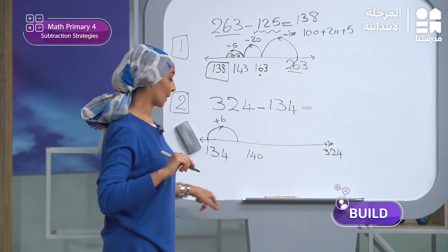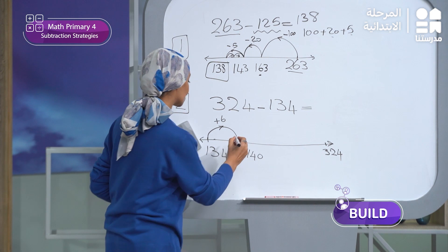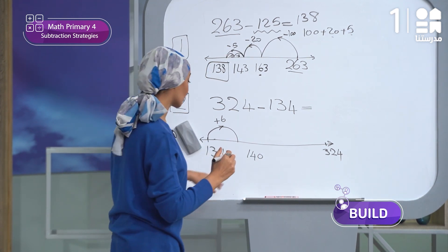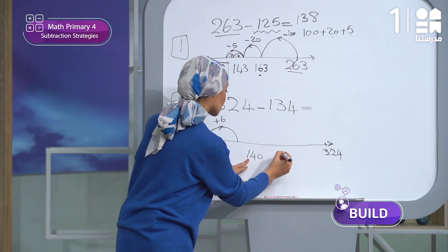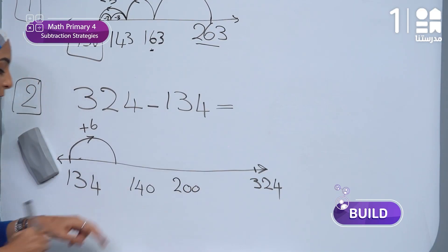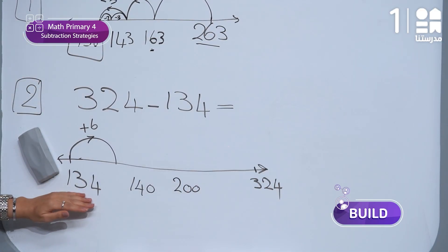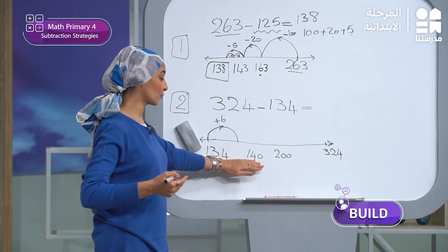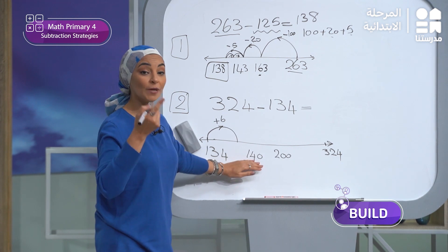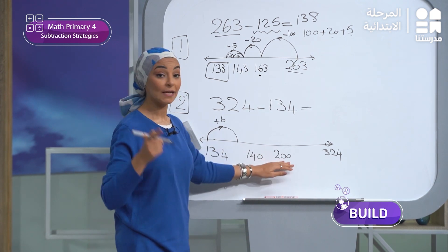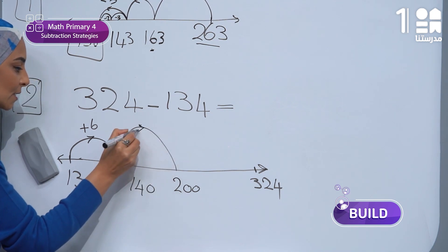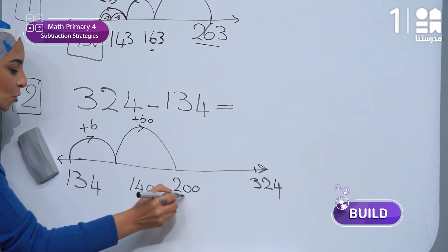Then what should I do? From 140, I will add 60 to reach the second benchmark, which is 200. So 140 plus 60 equals 200. Excellent, plus 60 to reach 200.